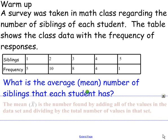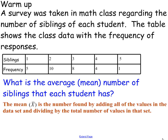So the mean is the number found by adding all the values in the data set and dividing by the total number of values in that set. So this is normally the formula for mean. By the way, to denote mean, we denote it by using x bar. So basically you add all the values in the data set and you divide by the total number of values in that set.